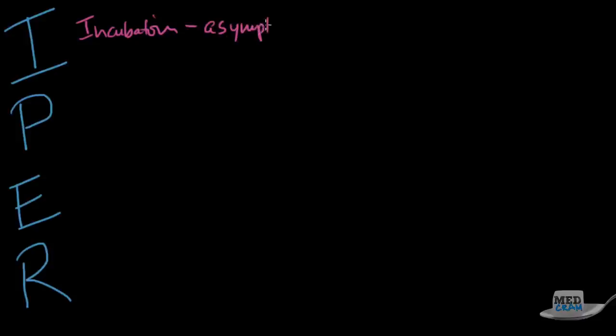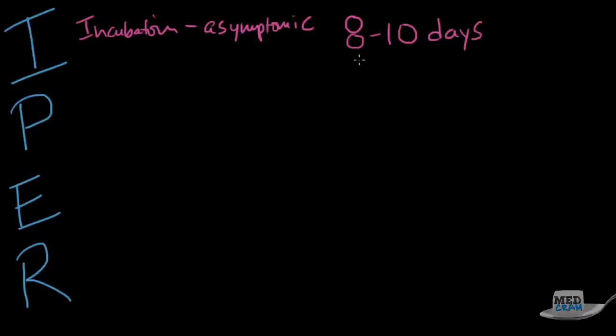In the first phase, the incubation period, the patient is usually asymptomatic. They don't feel any symptoms; very rarely would they feel symptoms. The key here is that this can last from 8 to 10 days, so they're walking around for 8 to 10 days and don't even know they've been infected.